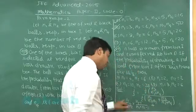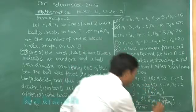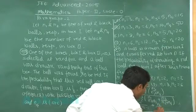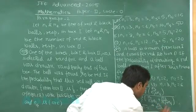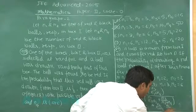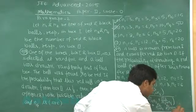Or we would have drawn black ball, that is N2 upon N1 plus N2, and then N1 upon N1 plus N2 minus 1.